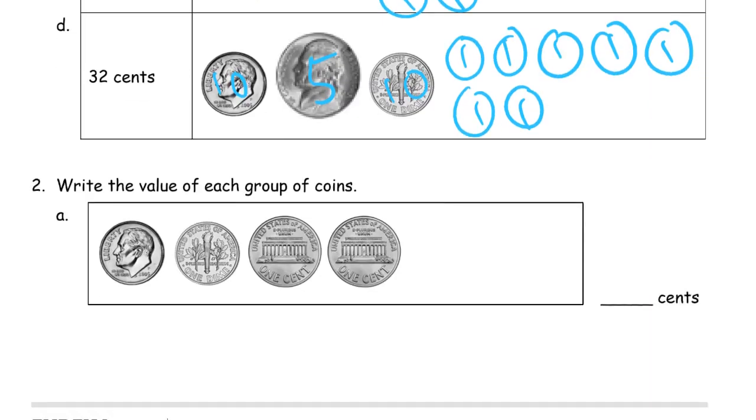And it says write the value of each group of coins. So here we have dimes, those are 10s, and pennies. It says right here, they're 1 cent each. So that's 10, 20, 21, 22. That's 22 cents.